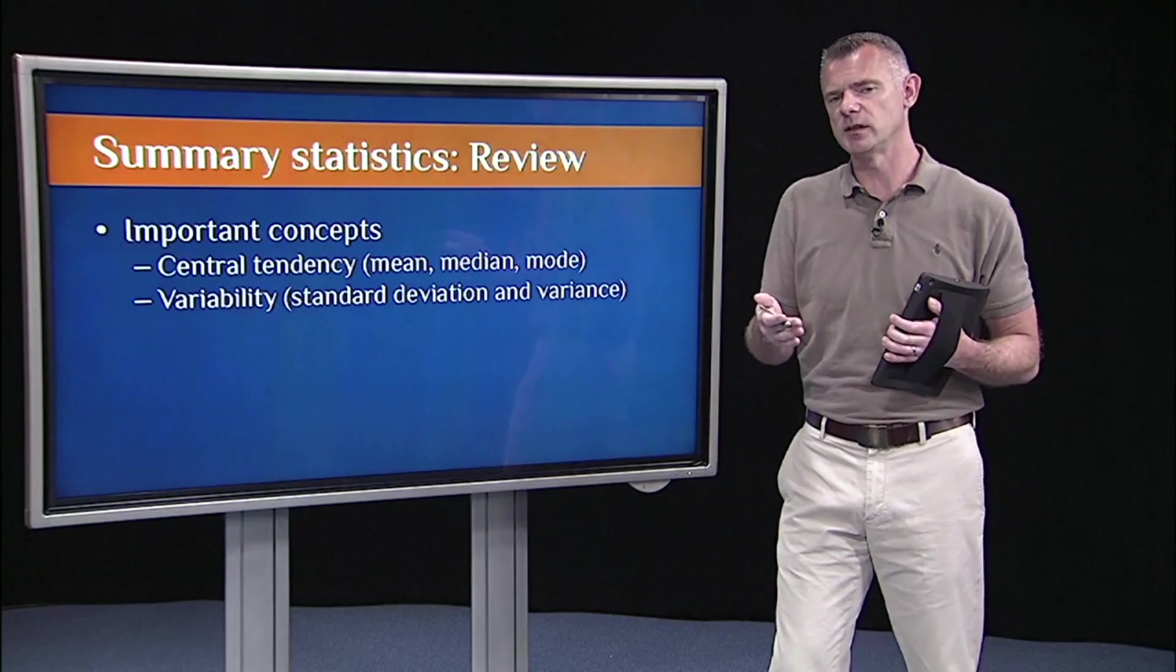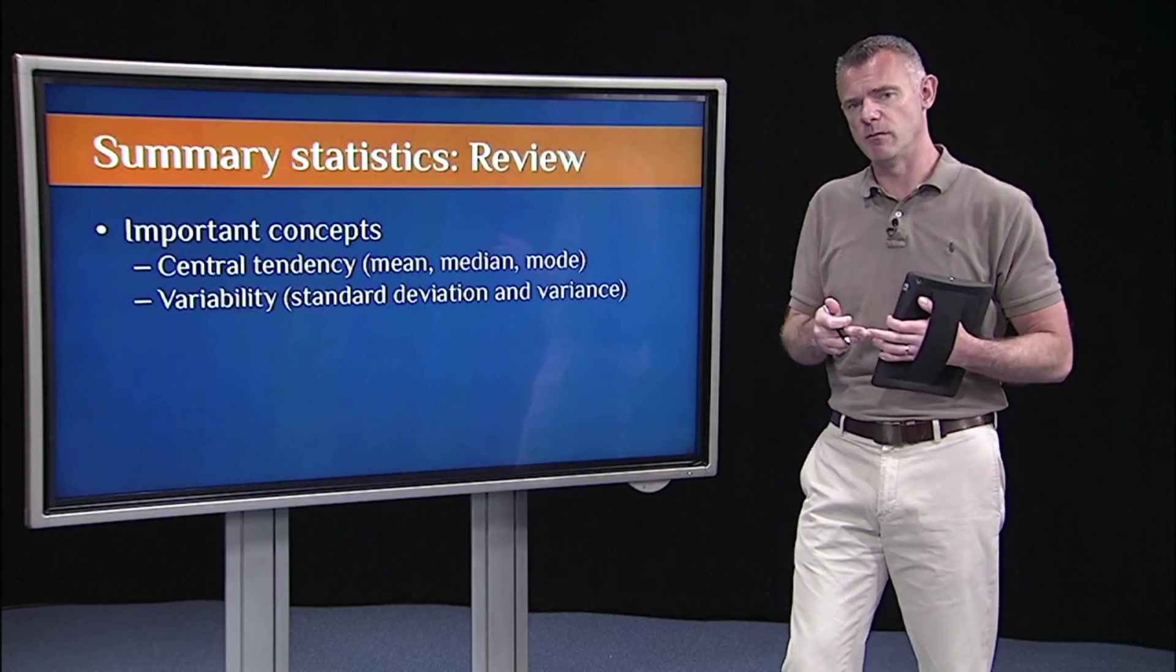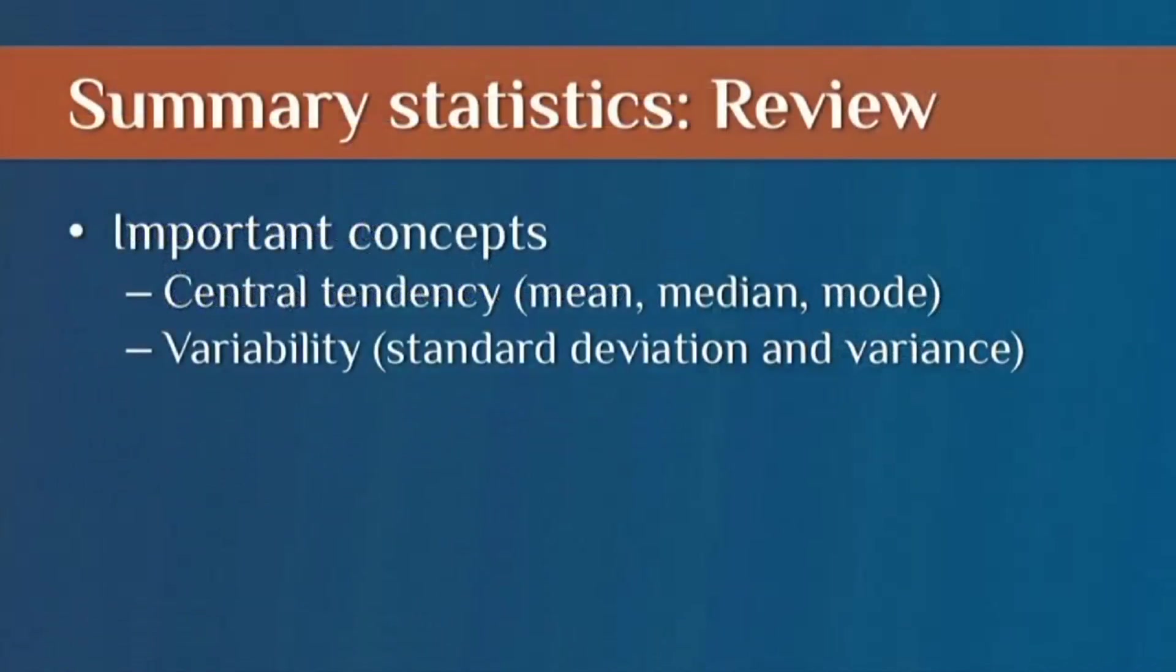The most common summary statistics are measures of central tendency. And the most common one of those is the mean or average, but you might want to do median in the case of extremely skewed distributions.